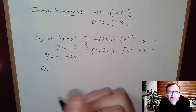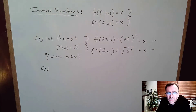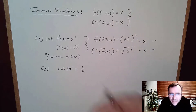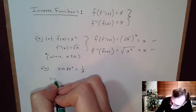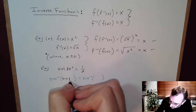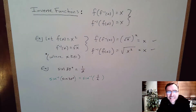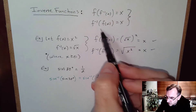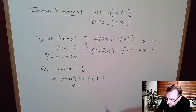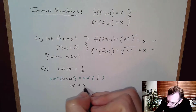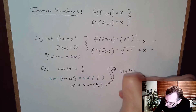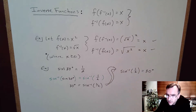We'll do more with inverse functions when we get to the graphing section, but for now: sine of 30 degrees equals 1/2 — that's an absolute fact. If I apply the inverse function to both sides, I get sine inverse of sine of 30 equals sine inverse of 1/2. Since sine inverse and sine cancel, I get 30 degrees equals sine inverse of 1/2.